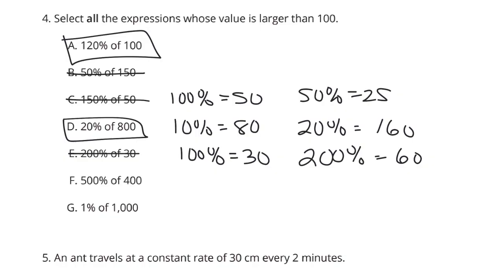500% of 400, I'm not even going to do that. 100% of 400 is 400, and 500% is five times bigger. That's 2,000, so that's much, much bigger. 1%, well, 10% of 1,000 is 100. So 1% is going to be smaller than that or 10, so nope, that's not there. A, D, and F are our solutions there.